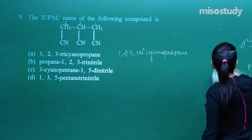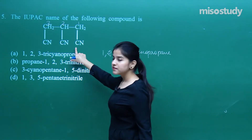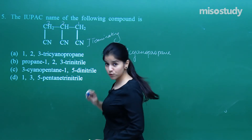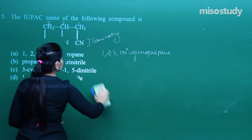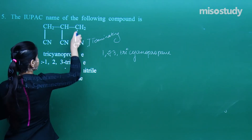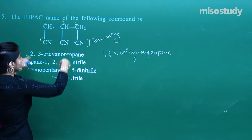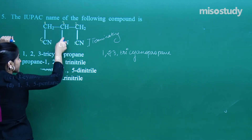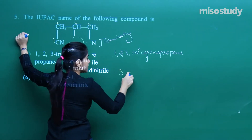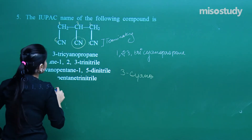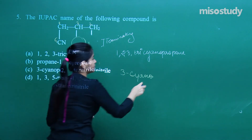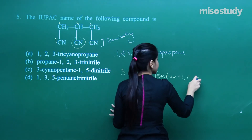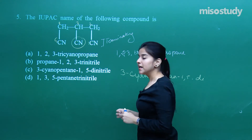That means we can number this carbon as 1. So I can have another way of naming — 1, 2, 3, 4, 5. I need the longest possible chain, that is why I have gone to this side and not the middle one. So what I have is 3-cyano — this will be treated as substituent — 3-cyano, and then pent-, pentane-1,5-di, and what is the suffix for CN? It is nitrile.